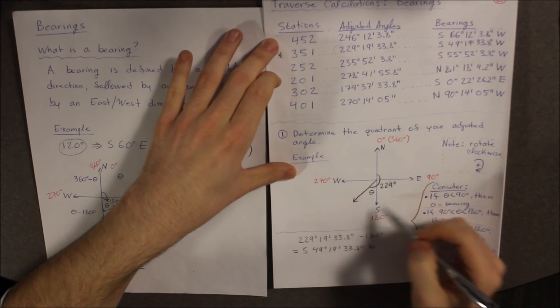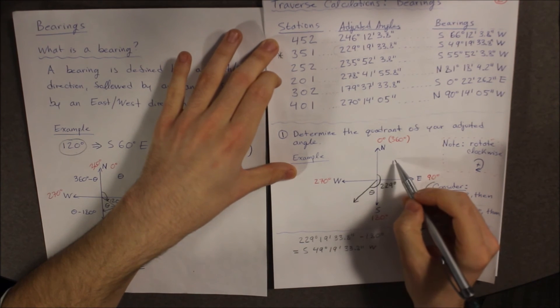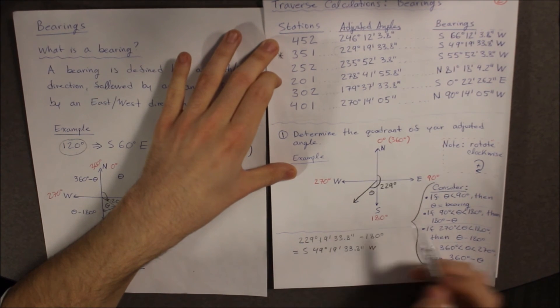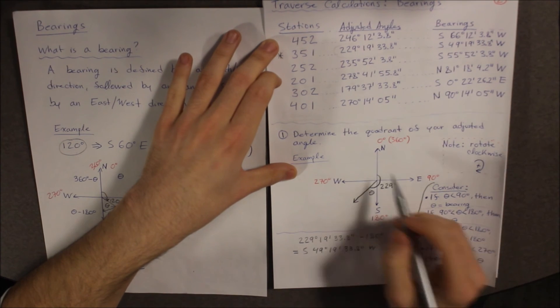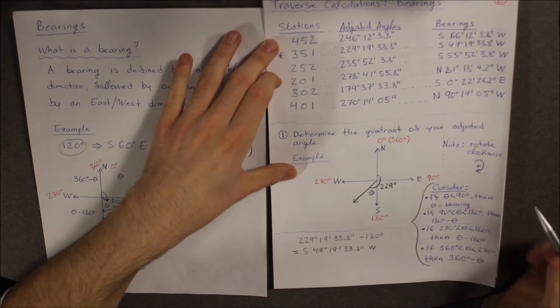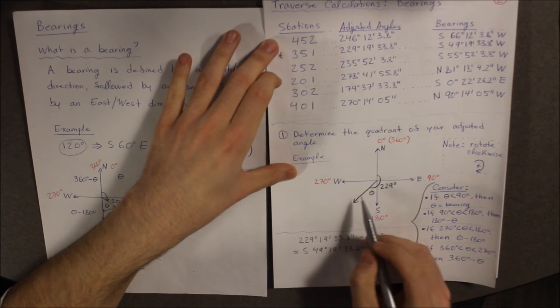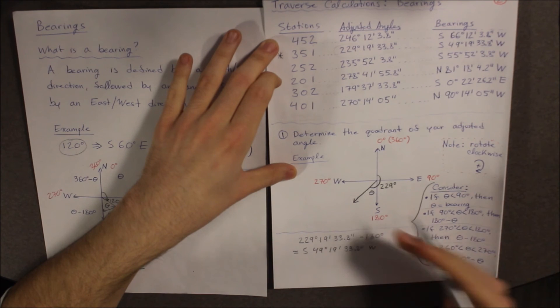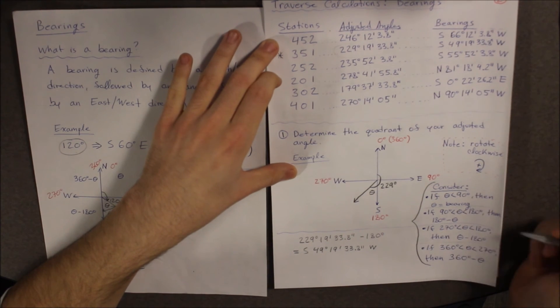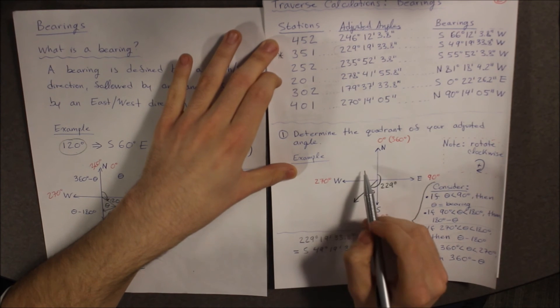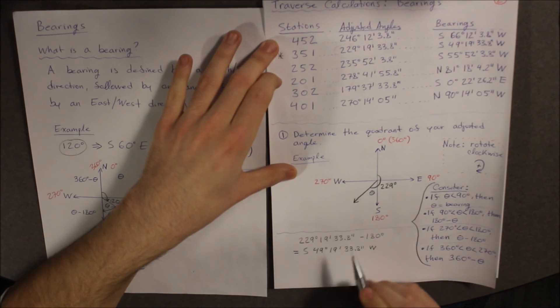Now, mind you, it will change for each quadrant you are in. For example, if you are in quadrant number one right here, then simply your angle is your bearing. If you are in quadrant number two, then it is 180 minus your angle. Quadrant three, which was the example we just covered right now, it is your angle minus 180. And finally, if it is in this quadrant right here, then it is 360 minus theta.